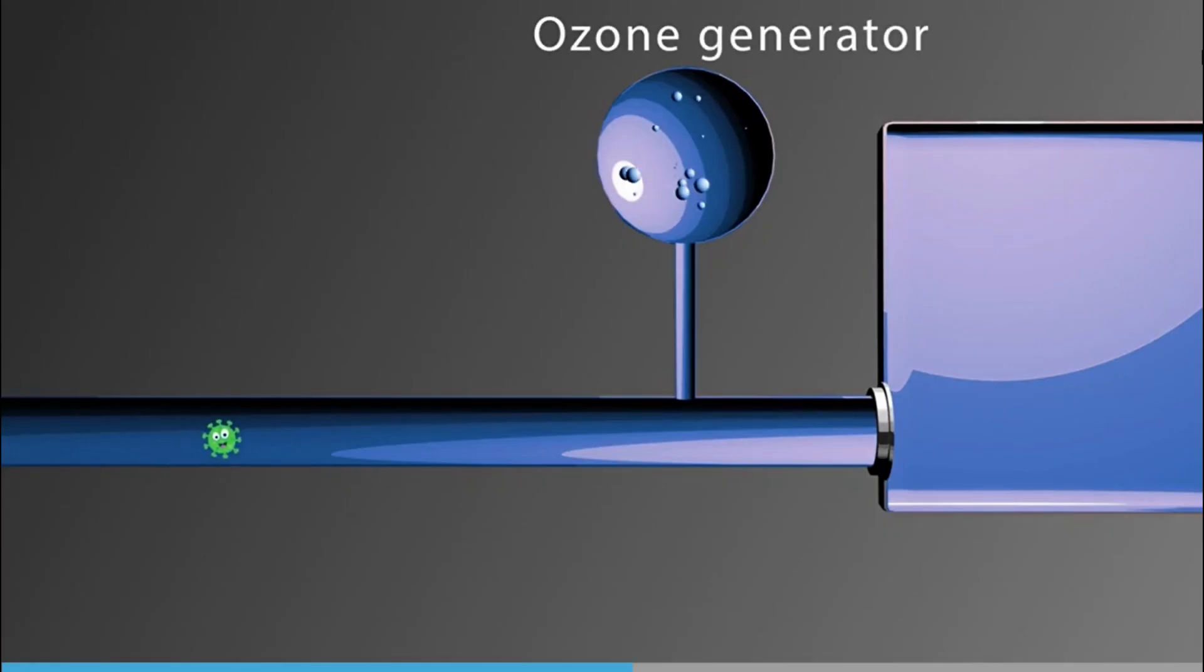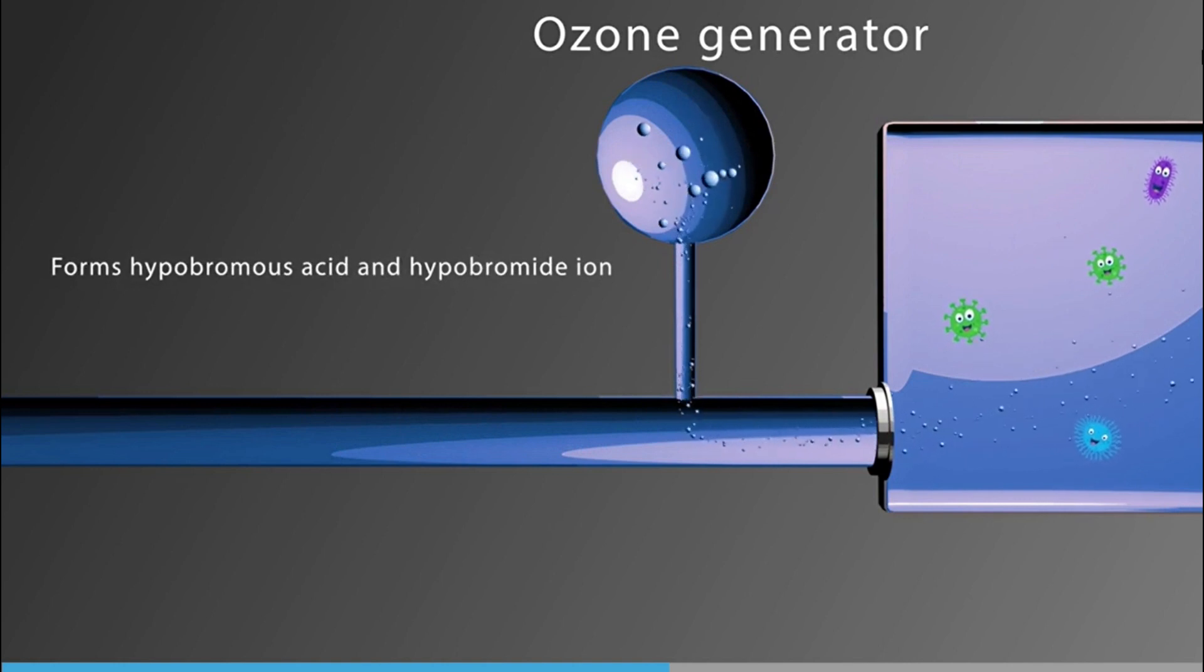Ozonation systems generate ozone (O3) from ambient air. Ozone is injected into the incoming ballast water to oxidize and neutralize aquatic species. Ozone reacts with other chemicals that occur naturally in seawater to form hypobromous acid and hypobromine ion, which are effective disinfectants.